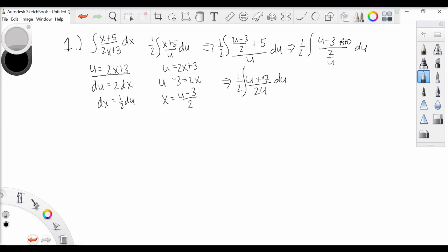So that just simplified: 10 minus 3 is 7, and this is really u over 1. So if you wanted to multiply by the reciprocal, that's how we get 2u on the bottom.